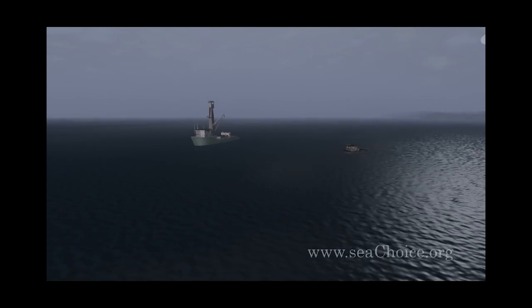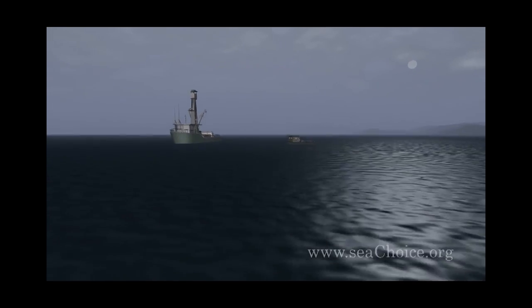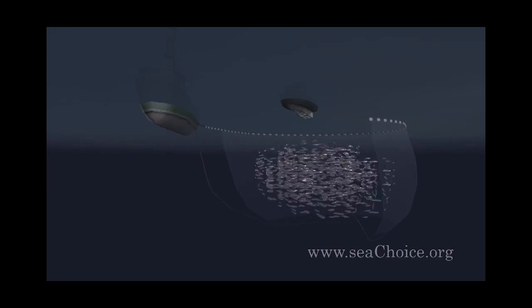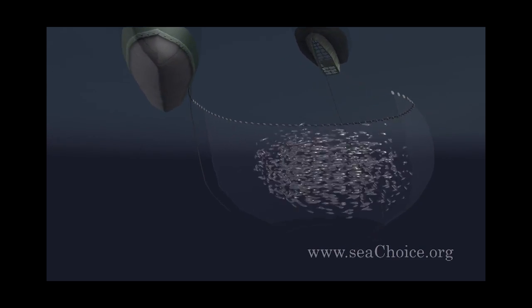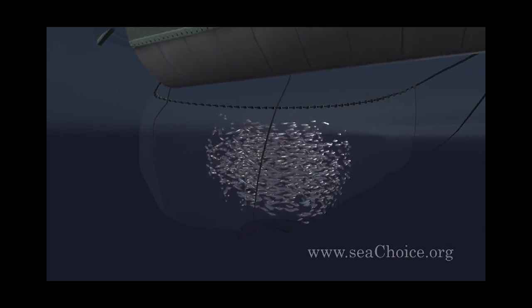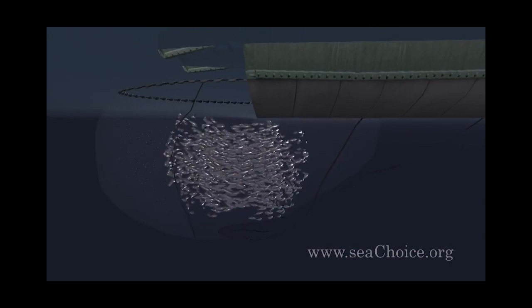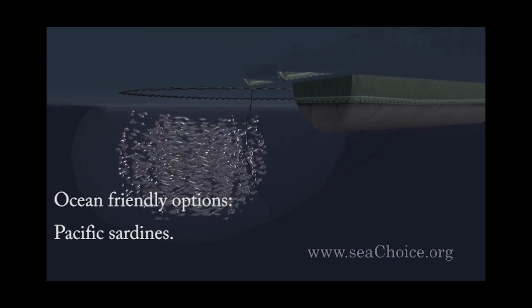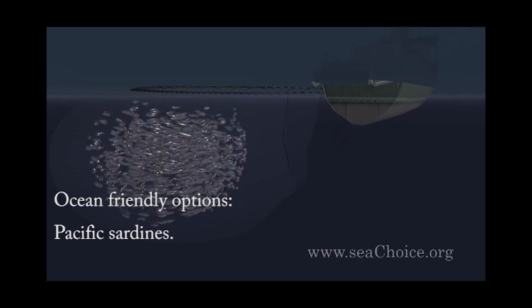Purse seines are set in the water, usually close to the surface, in a circle using a small boat called a skiff. It's an effective way to catch schooling fish, such as herring and sardines. Purse seines have very little impact on habitat, and bycatch rates in Canadian fisheries are typically low.